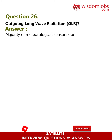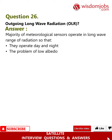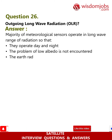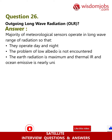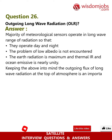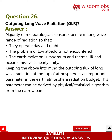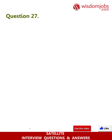Question 26: Outgoing Long Wave Radiation (OLR). The majority of meteorological sensors operate in the long wave range of radiation so that they operate day and night, avoiding the problem of low albedo. The earth's radiation is maximum in thermal IR and ocean emissivity is nearly unity. The outgoing flux of long wave radiation at the top of the atmosphere is an important parameter in the earth-atmosphere radiation budget, and can be derived by a physical-statistical algorithm from the narrow band measurements.